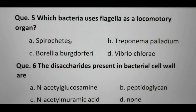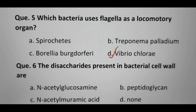Spirochetes, Treponema, and Borrelia — Treponema and Borrelia are examples of Spirochetes. Spirochetes use axial filaments for locomotion, not flagella. Vibrio cholerae has a single flagellum present, so D is our right answer here. Treponema causes Syphilis disease, and Borrelia causes Lyme disease.